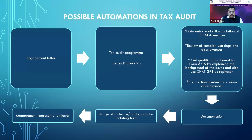For example, for drafting the engagement letter, automation is possible. Then for performing audit, we need a tax audit program. As per the code of ethics, for every assignment there has to be an audit program, including for tax audit, not only for statutory audit. Hence, it is important to have an audit program even for tax audit.